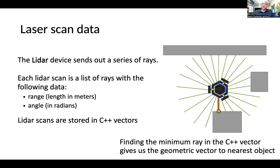Once we have that data, you'll find the minimum ray inside that vector — the smallest value — and that will let you use both the range and angle of that data to convert from polar coordinates to Cartesian coordinates. This gives a geometric vector representing the direction to the nearest object. We'll use that to get closer to the wall, compute the direction along the wall, sum those together, and send that as the control command to the robot.